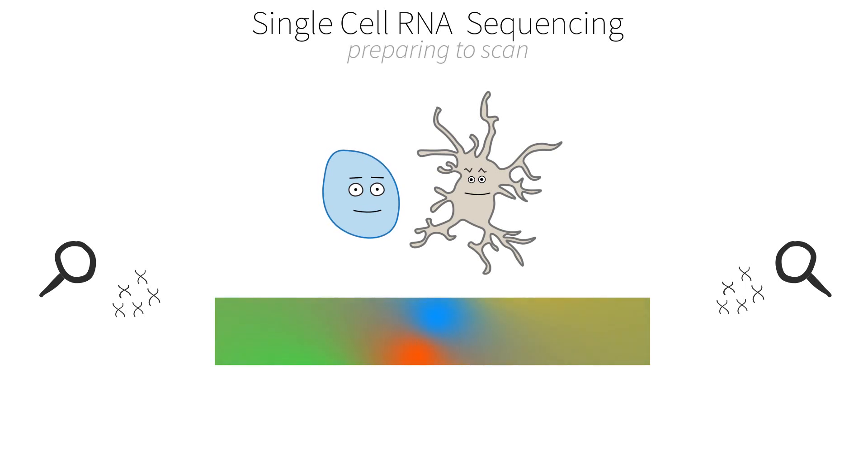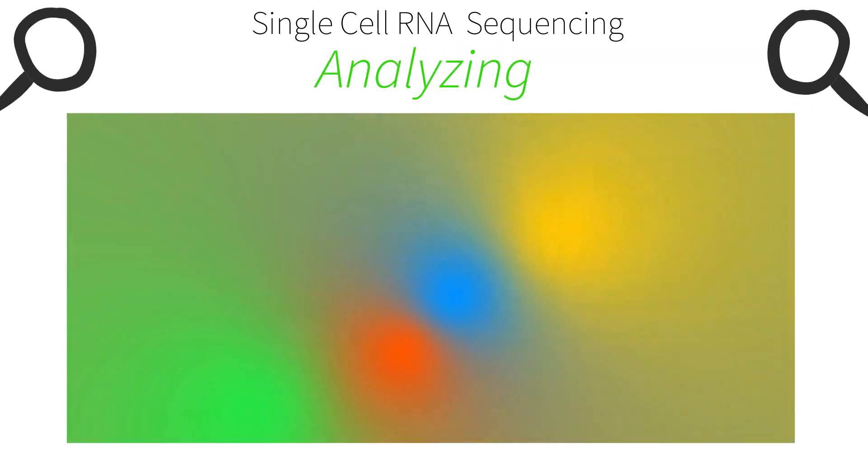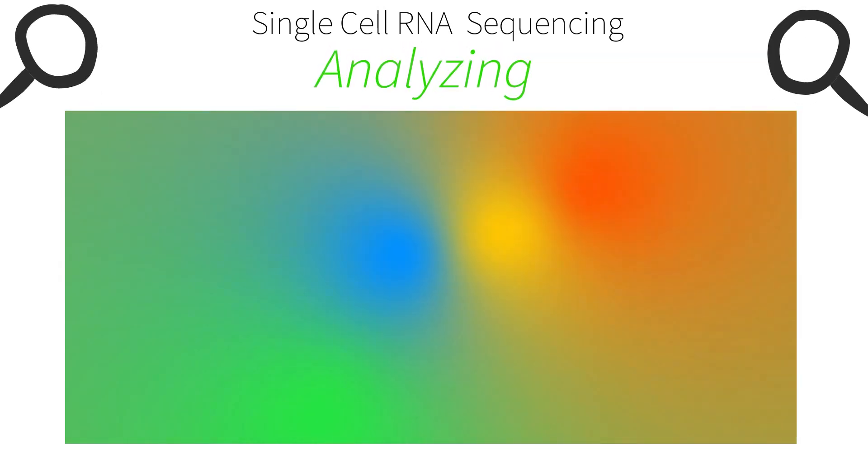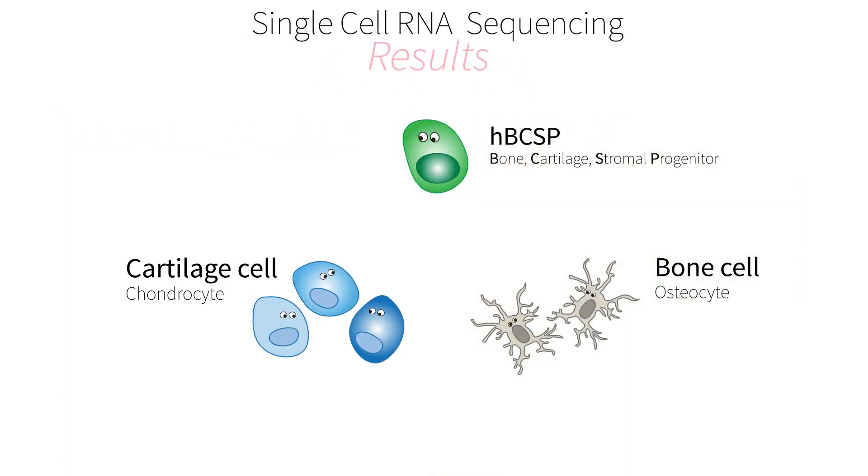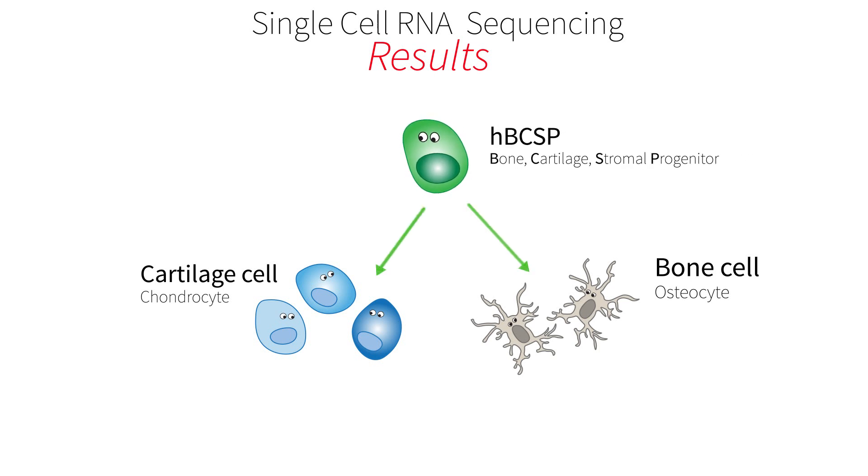This information we can use to determine their identity. What does this show? Well, I see me and I see you. But that's weird. What's weird? Well, I am a cartilage cell and you are a bone cell. We are so different, but we both come from the bone cartilage stromal progenitor cell, the BCSP.